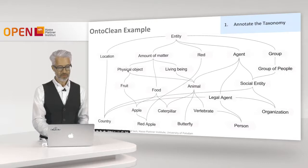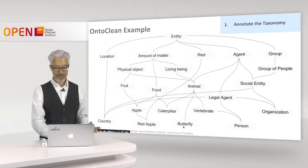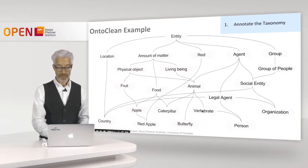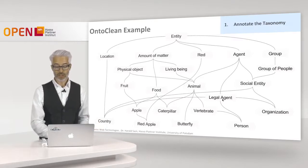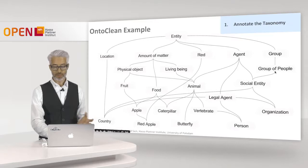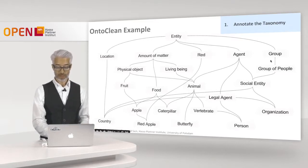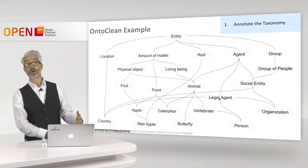Continuing with physical objects: we have fruit and animal. Under fruit we have apple, and more specifically red apple. Under food we also have apple and interestingly caterpillar. Caterpillar likewise is an animal, like butterfly or the group of vertebrates. A special vertebrate is a person, who is also a legal agent. Social entities are a special kind of agent and also a specialized kind of group of people. Organizations are sub-ordered to both social entities and legal agents. This is quite a complex taxonomy.